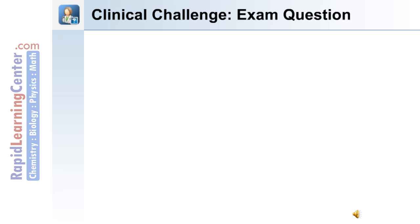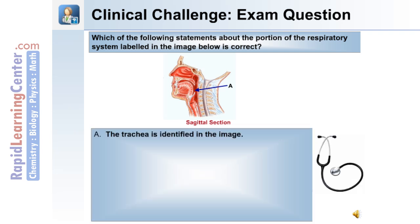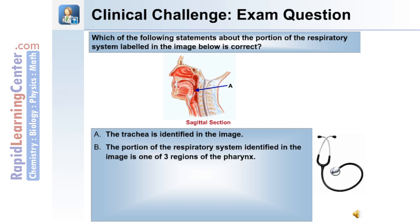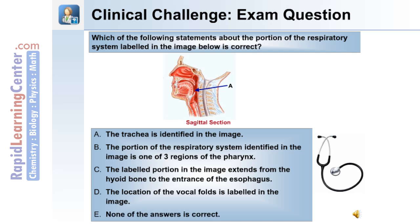Here's a clinical challenge exam question based on what you've learned so far. Which of the following statements about the portion of the respiratory system labeled in the image is correct? A: The trachea is identified in the image. B: The portion of the respiratory system identified in the image is one of three regions of the pharynx. C: The labeled portion extends from the hyoid bone to the entrance of the esophagus. D: The location of the vocal folds is labeled in the image. Or E: None of the answers is correct.